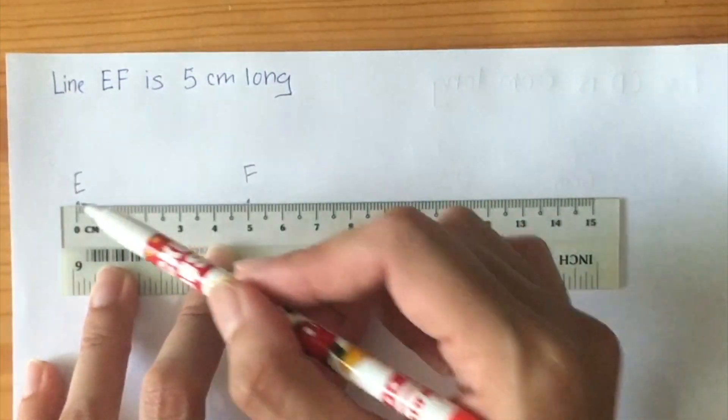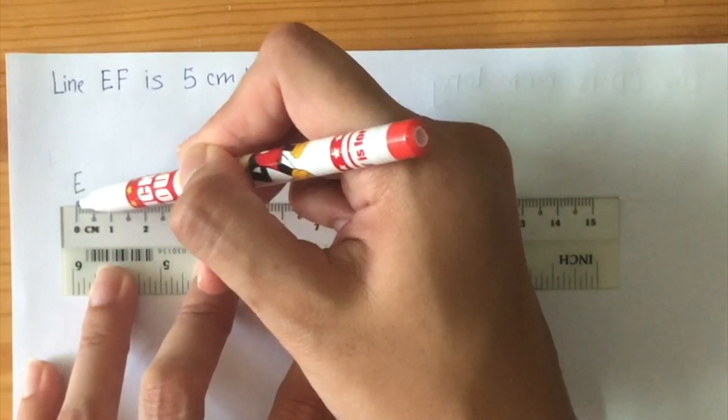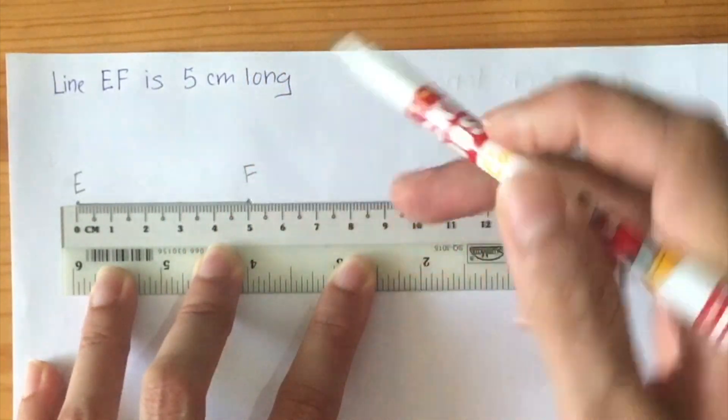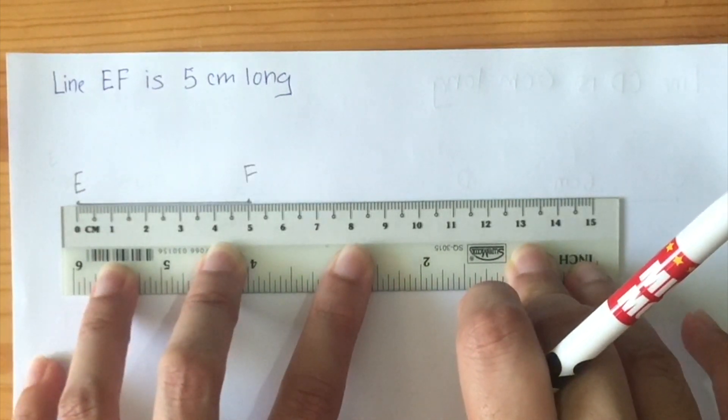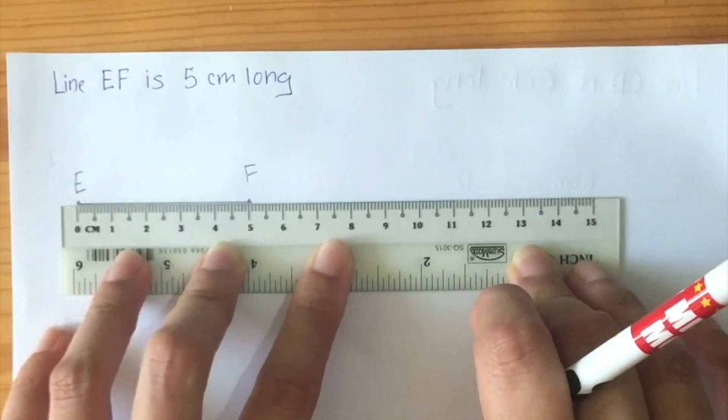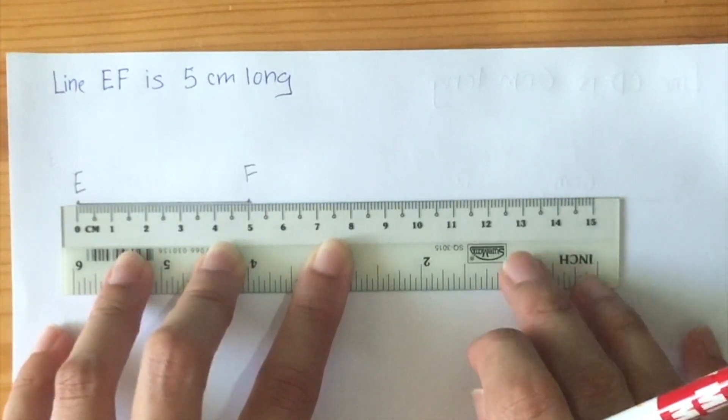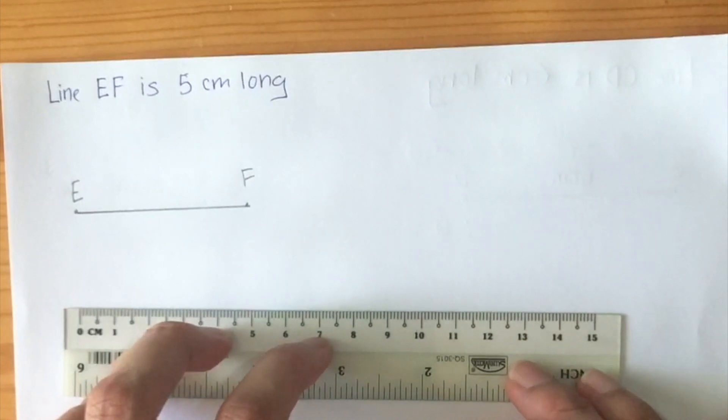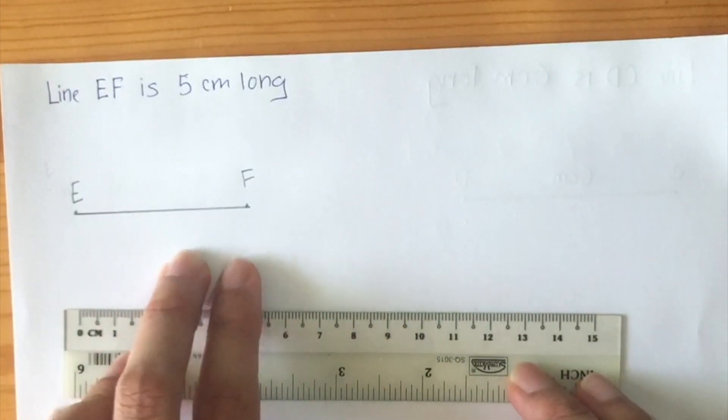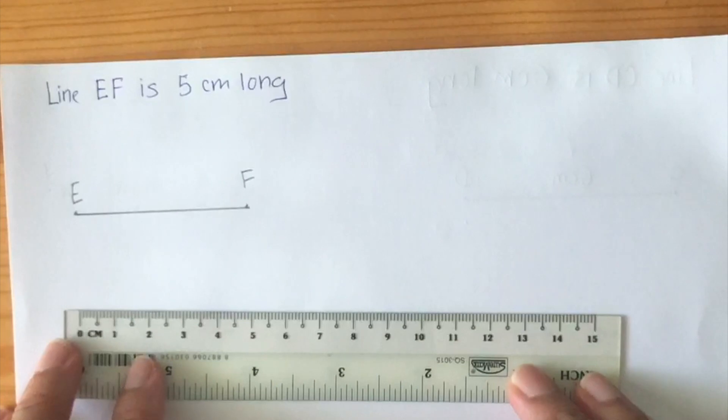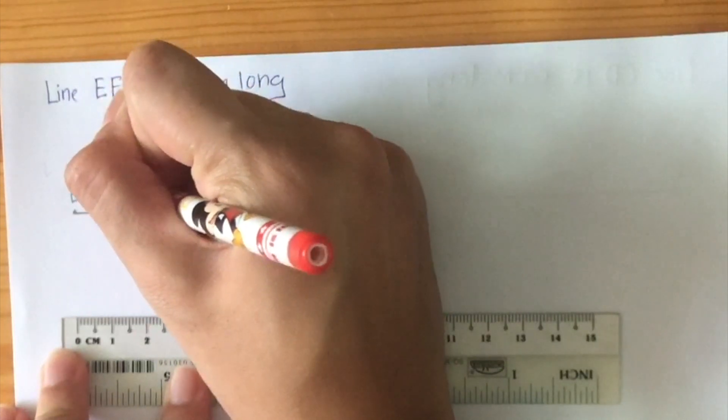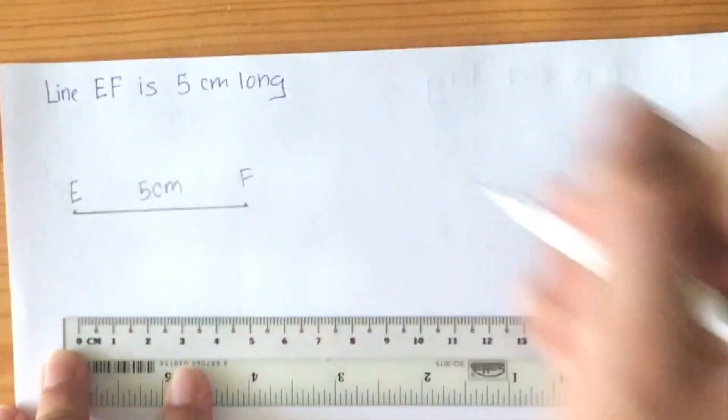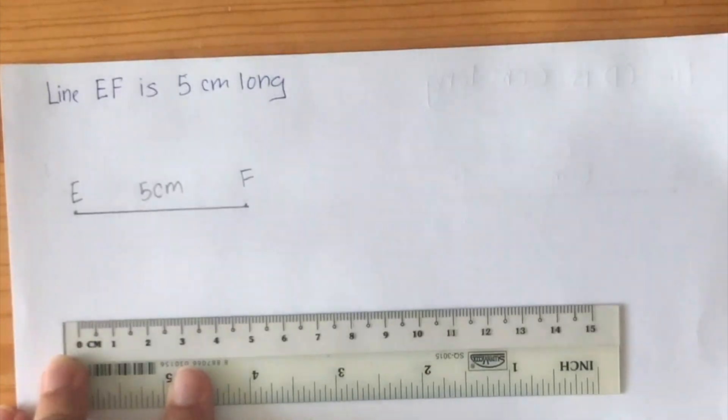So once I have done this, I join the two markings together. Now should I move my ruler? No I shouldn't, if not my line will not be straight. Now once we remove it, there we have our straight line. And what is one final thing we need to do? That's right, we need to label the line. We need to label it as five centimeters. Did you get that right? Good job boys and girls.